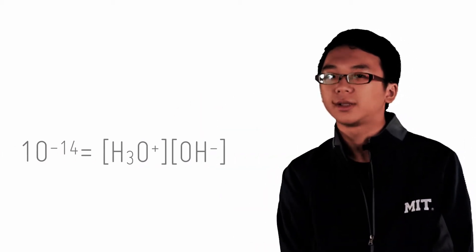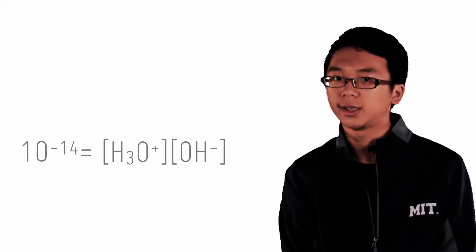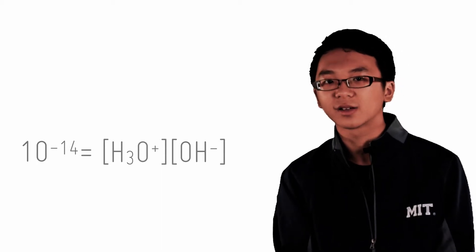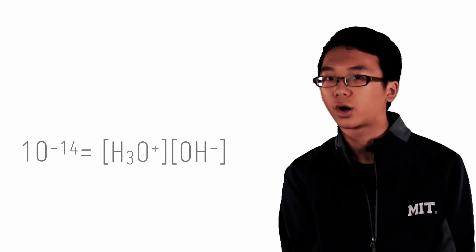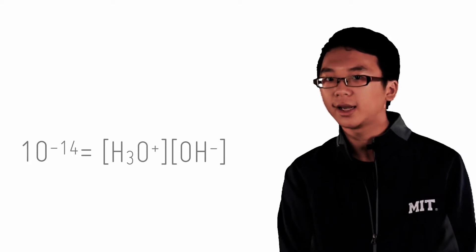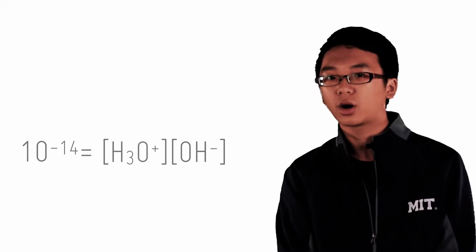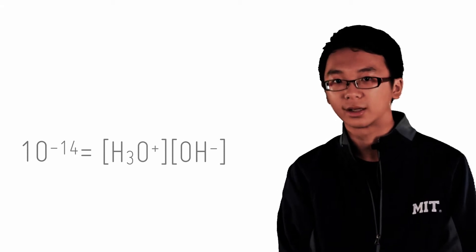Kw has a value of 10 to the power of negative 14. What then is the significance of this value? It tells you that the concentration of hydronium multiplied by the concentration of hydroxide at any one point in time is a constant value of 10 to the power of negative 14.